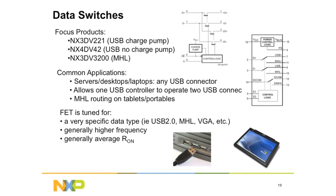A data switch is tuned for a very particular type of data. You've heard of USB, MHL, or VGA — each of these has a very specific requirement for the signals that pass through it. So the FET has been tuned specifically for those needs. All the voltages, all the protocol, all the signals are built right into the switch, so it's very simple to implement them.